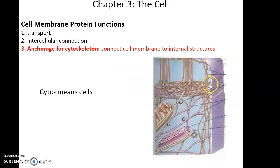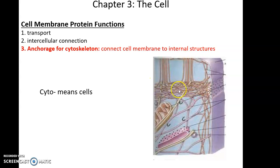Proteins within the cell membrane can also attach to internal structures of the cell, anchoring those structures in certain areas. For instance, the cytoskeleton — long protein structures within the cell that help give it its shape — can attach to cell membrane proteins. Cyto means cell, so the cytoskeleton is literally the skeleton of the cell.